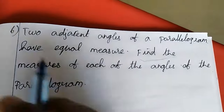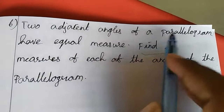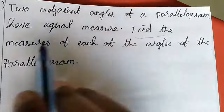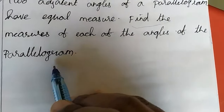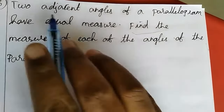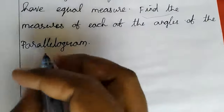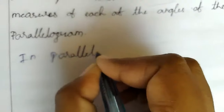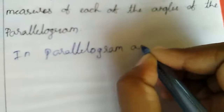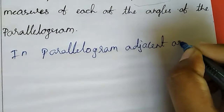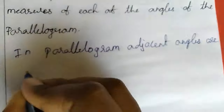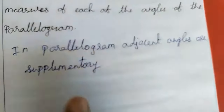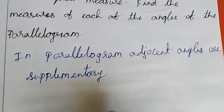Now we will move to problem 6. Two adjacent angles of the parallelogram have equal measure — both adjacent angles are the same. Find the measure of each of the angles of the parallelogram. In a parallelogram, adjacent angles are supplementary. If you add the two angles you get 180 degrees, but they told the two are also equal.